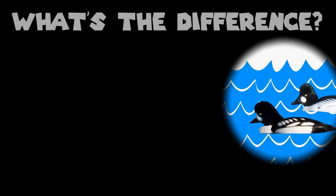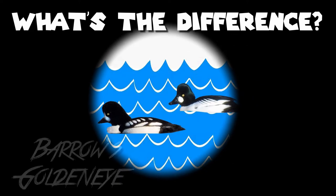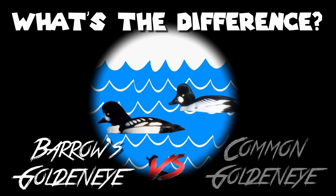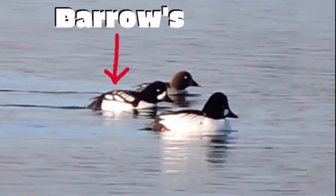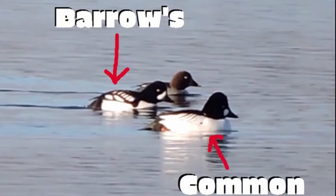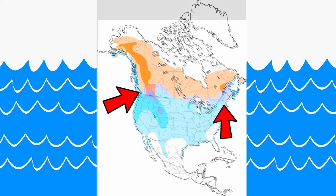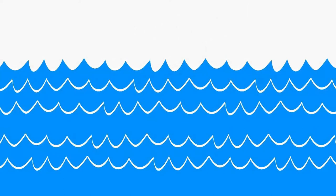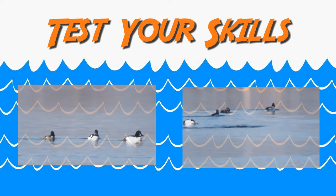Today on What's the Difference, we're going to be looking at the difference between the two golden eyes. By the end of this video, hopefully you'll be able to identify the Barrows golden eye from the common golden eye. Now the range of these two birds does overlap, so it's important to know what the differences are. I'm going to get into the differences right now, but afterwards I'm going to have a couple clips for you guys, just to test your skills. Let's get into it.